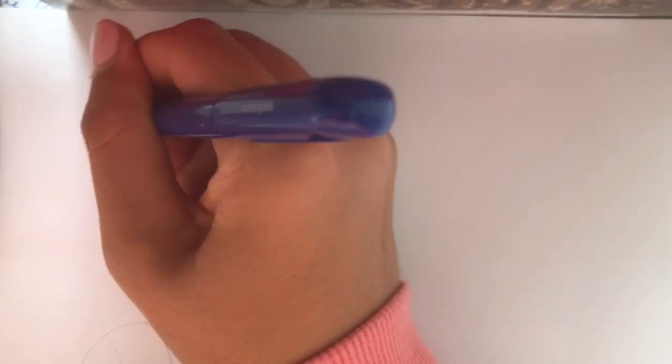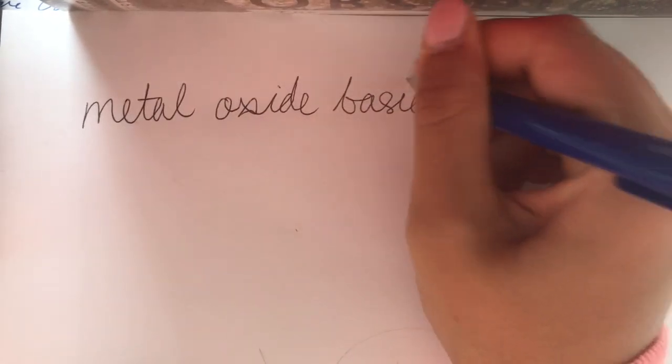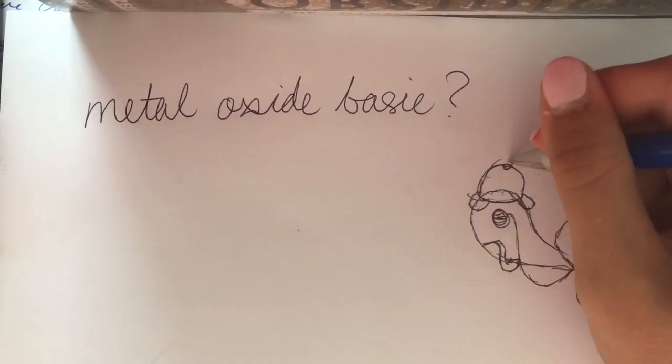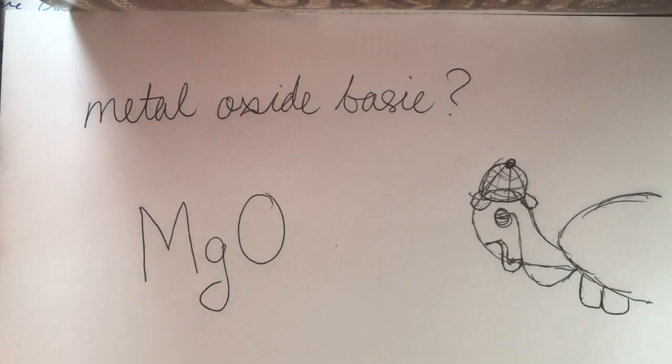Which brings us to the experiment at hand. The purpose of this experiment is to determine the nature of metal oxides, whether or not they are basic. The metal oxide we will be analyzing today is magnesium oxide.